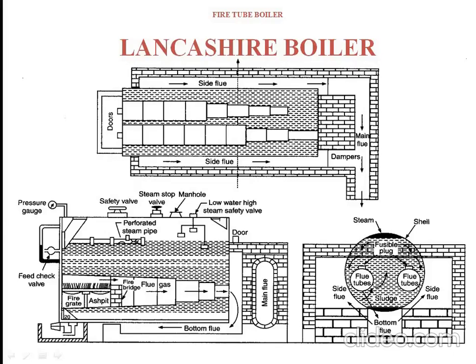Hello students, this is the second video on boilers. In the first video, we discussed about what is a boiler, what are the types of the boiler, what are the factors to be considered when selecting a boiler and what are the properties of a good boiler. After that we discussed about the Cornish boiler. The Cornish boiler is a fire tube boiler. Now we will discuss about another fire tube boiler — this is the Lancashire boiler.